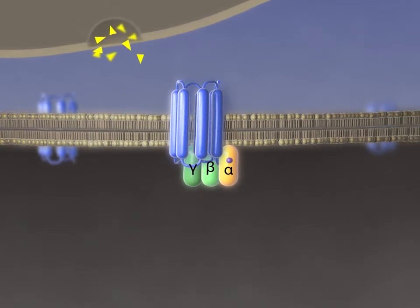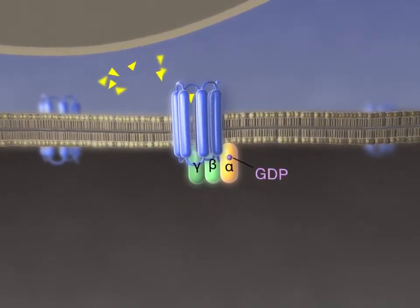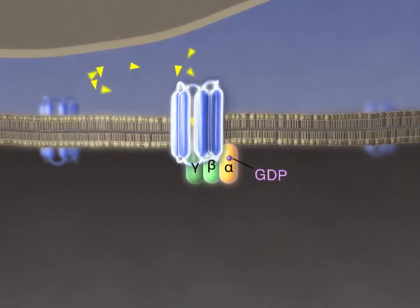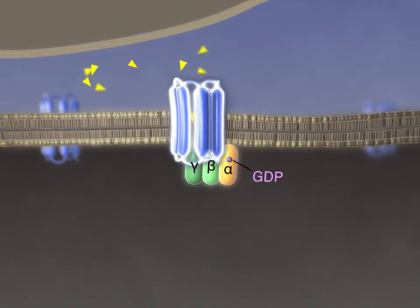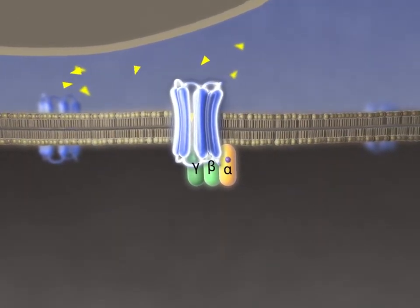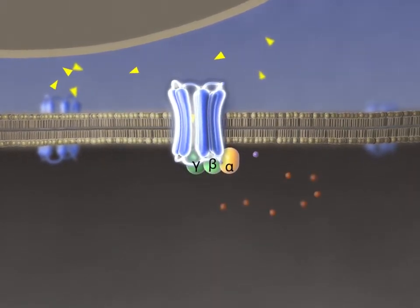When an agonist, in this case adrenaline, binds to the GPCR, the receptor changes its conformation in such a way as to influence its interaction with the G-protein. This causes the G-protein to change its conformation, opening up the guanine nucleotide binding pocket on the alpha subunit and releasing GDP into the cytoplasm.